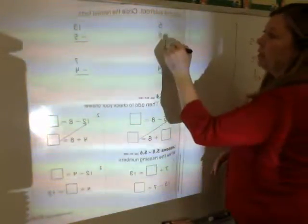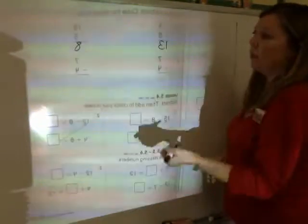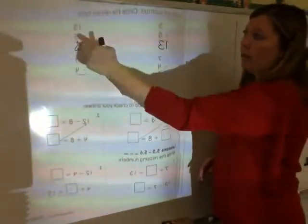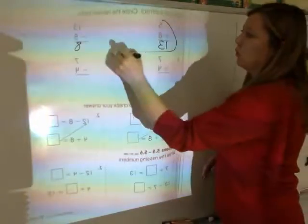So 5 plus 8 is 13, 13 minus 5 is 8. Are these related? Well, I have 5, 8, and 13 here. I have 5, 8, and 13, so these are related. So I'm going to circle them.